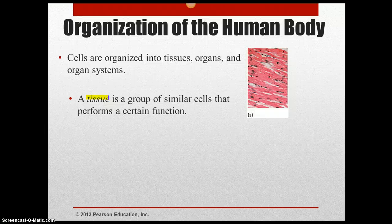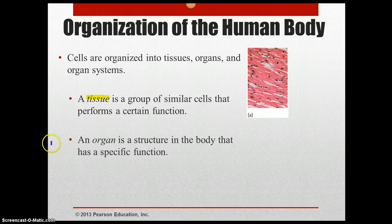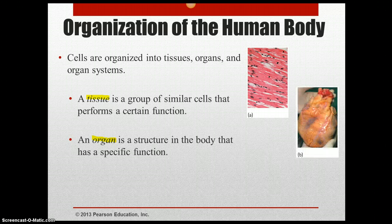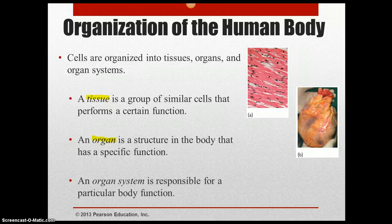This is an example of what a tissue looks like in our body. An organ is a structure in the body that has a specific function. Our tissues make up our organs, like our heart, stomach, and brain. And this is a picture of our heart.